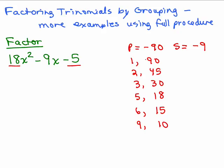Since the sum is negative, the bigger number must be negative. And since the product is negative, the other sign must be opposite sign. We're looking for two numbers in this list that have a sum of negative 9, and that would be right here at 6 and negative 15.